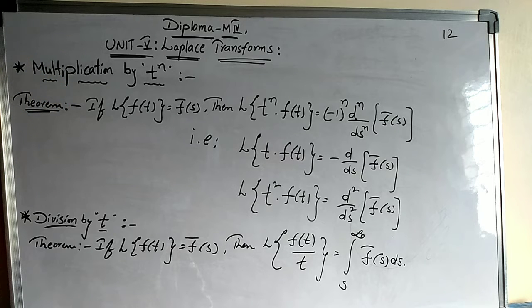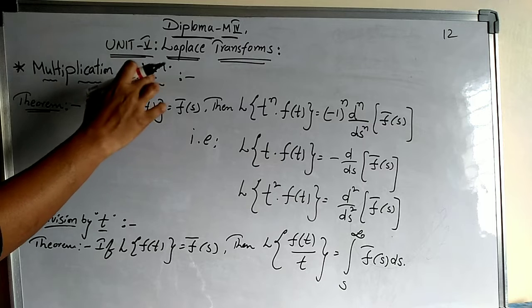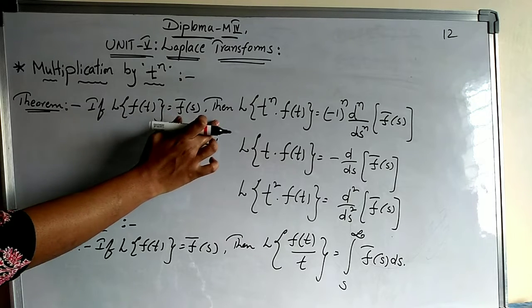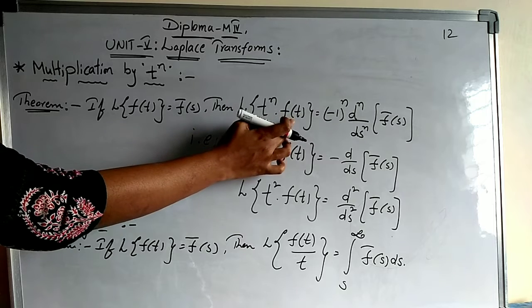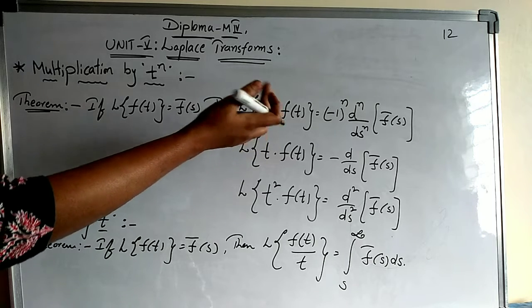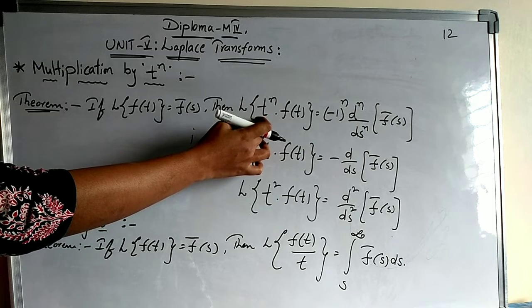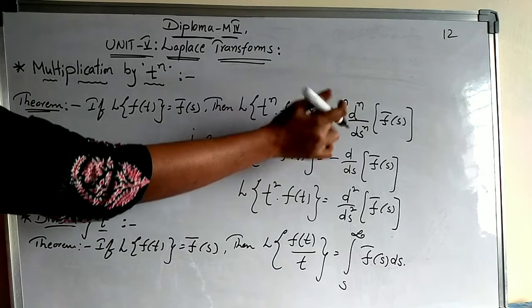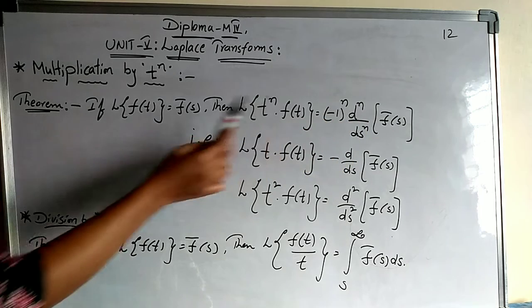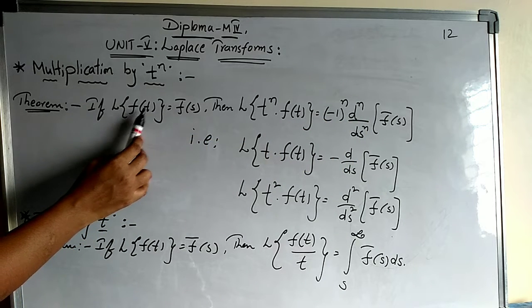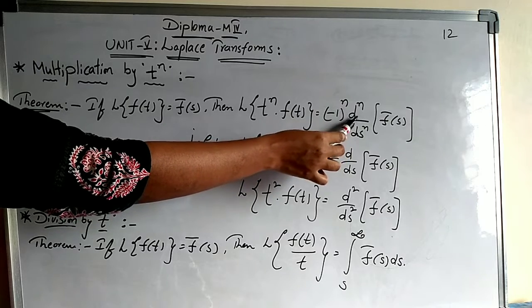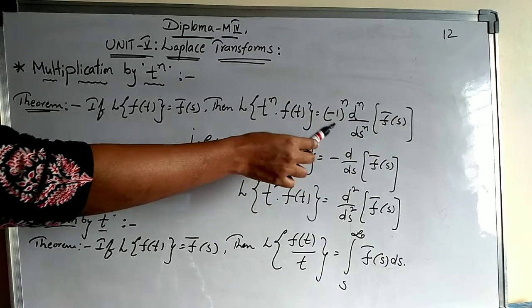The first method is multiplication by t to the power of n. The statement is: if Laplace of f(t) is equal to F̄(s), then Laplace of t^n · f(t) — that means any function f(t) multiplied by t terms where n equals 1, 2, 3, or whatever — is equal to (-1)^n · d^n/ds^n · F̄(s). Here d^n/ds^n means taking the nth derivative of that function with respect to s.